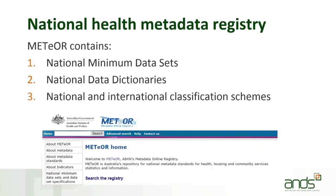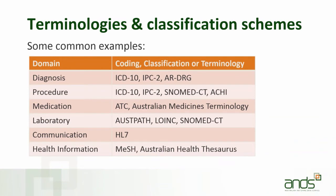Meteor contains structural and administrative metadata including the national minimum data sets, which define which metadata elements need to be collected, and the national data dictionaries, which include the definitions of those metadata elements and how to classify data according to national and international standards. A very large number of coding and classification systems have been developed over time for healthcare.